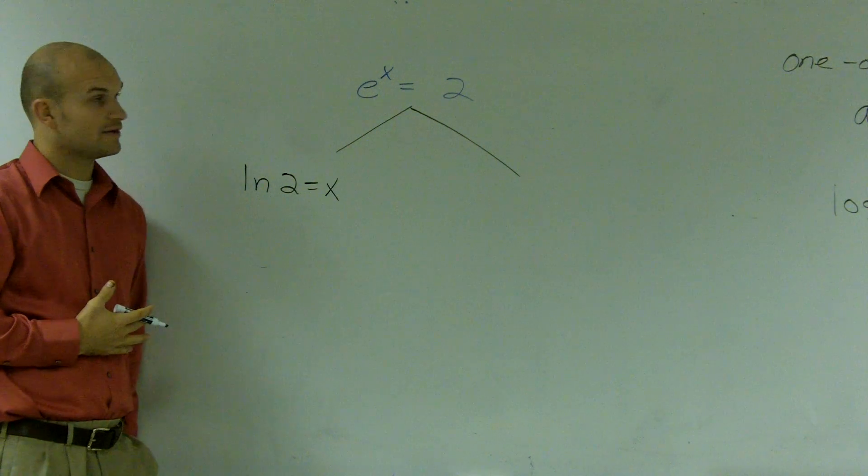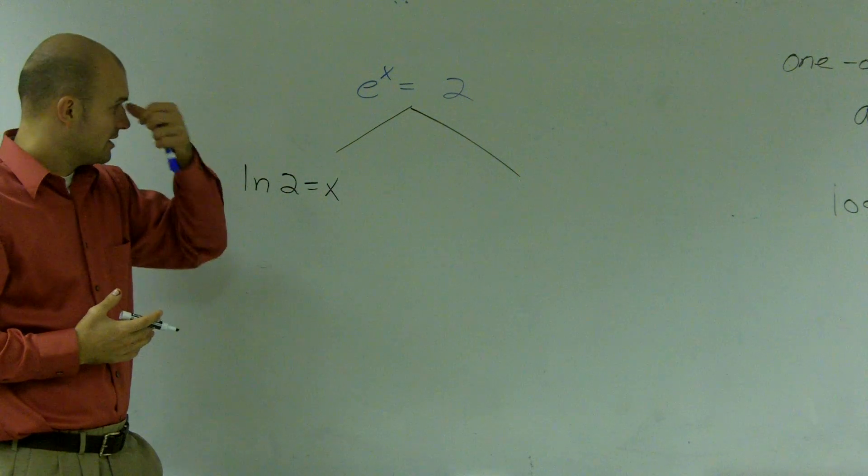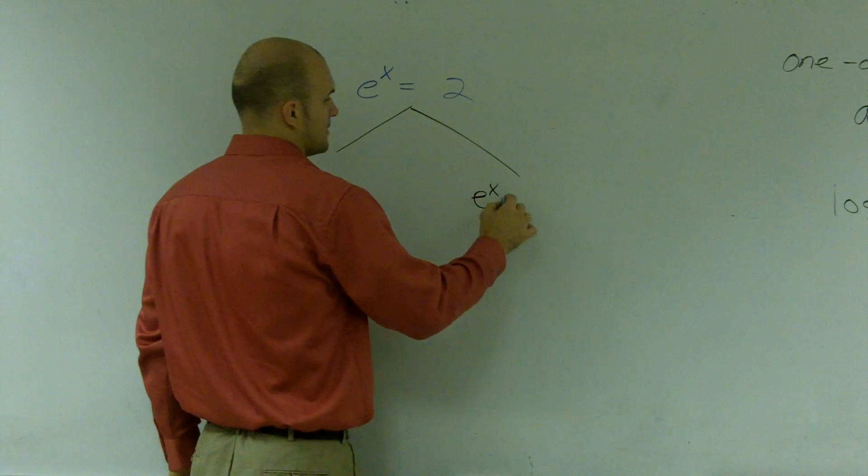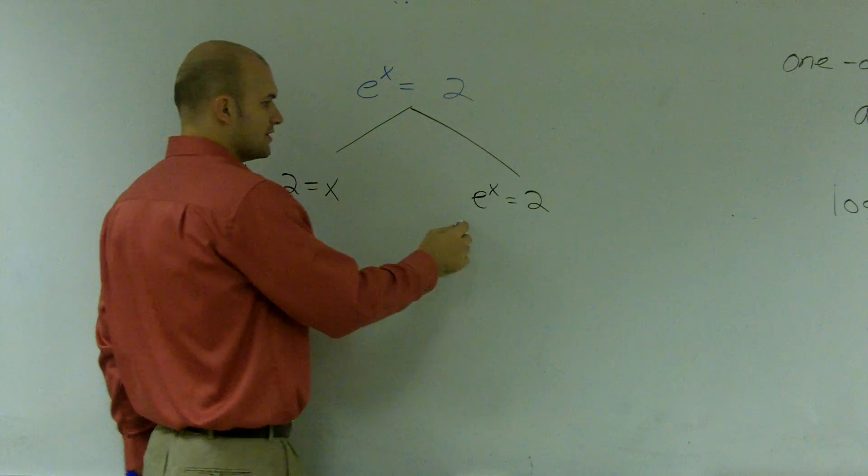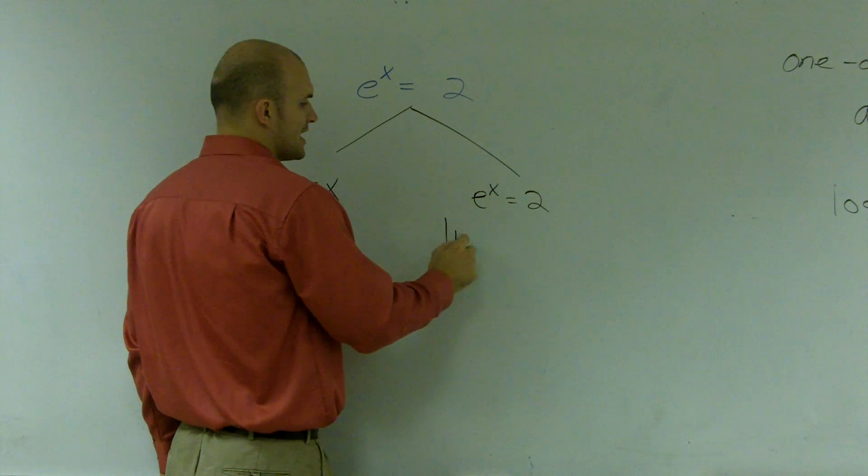The other way you could solve it is you could say, well, if I have e to the x equals 2, it is possible for me to take the logarithm, the natural logarithm, of both sides.